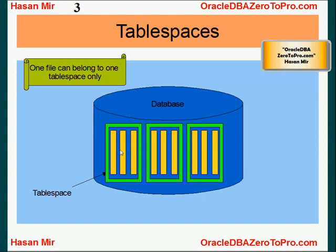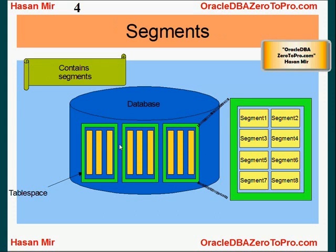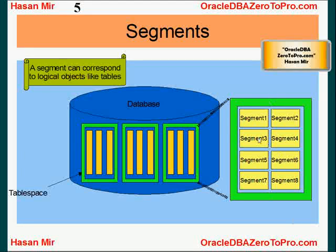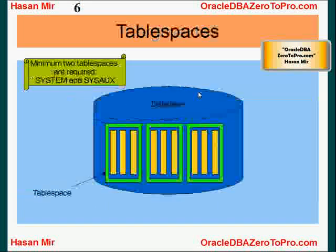One data file can only belong to one tablespace, however one tablespace can contain one or more data files. That was about the physical structure — the tablespace has data files. On the logical side, a tablespace contains segments. This tablespace contains multiple segments; a segment can represent a table or logical objects like tables, indexes, etc.